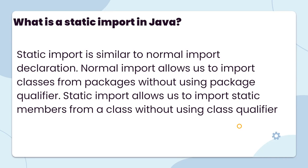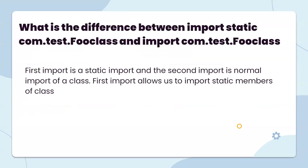What is static import? The static import is similar to a normal import declaration. Normal import is used to import a class from a package without using package qualifiers. Static import allows you to import a static member from a class without using class qualifiers. The first import is the static import, and the second is the normal import clause.